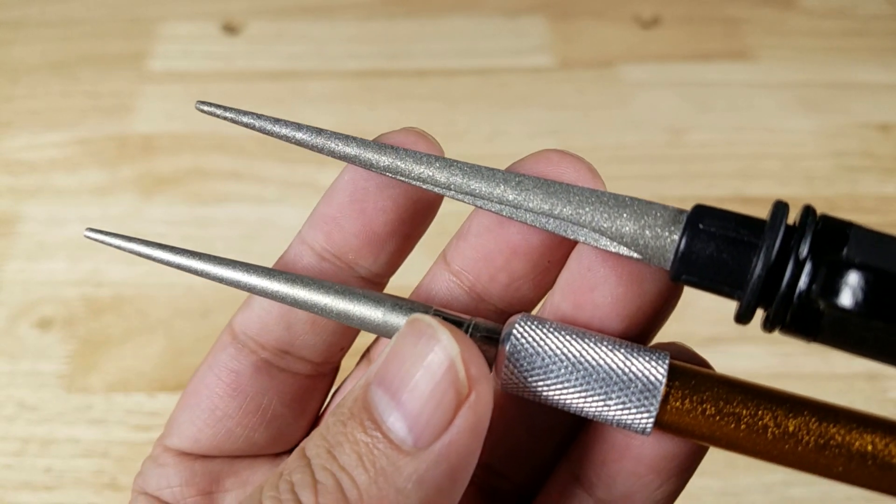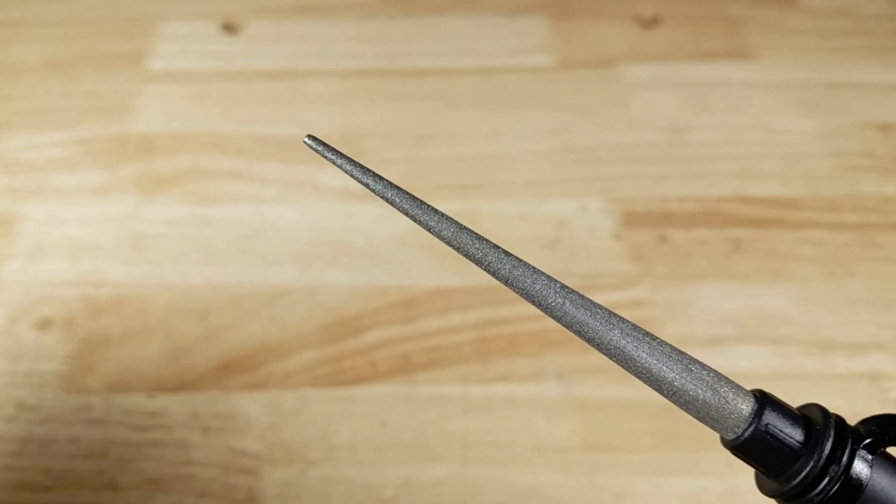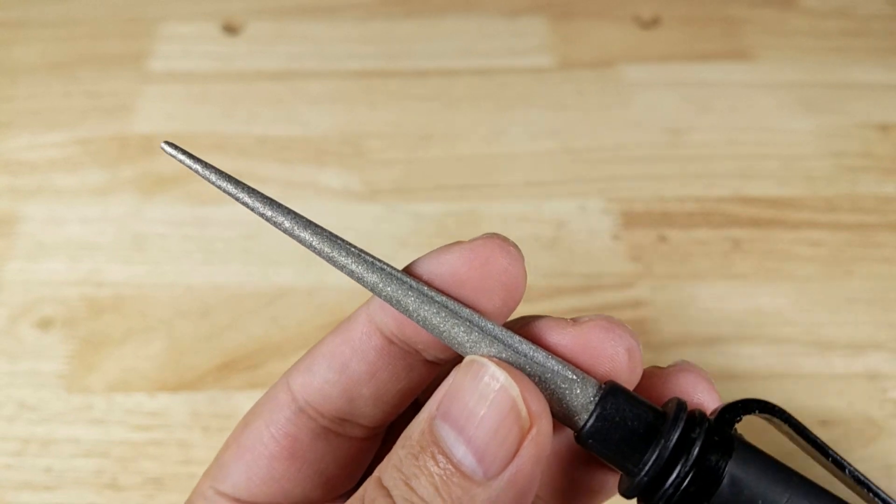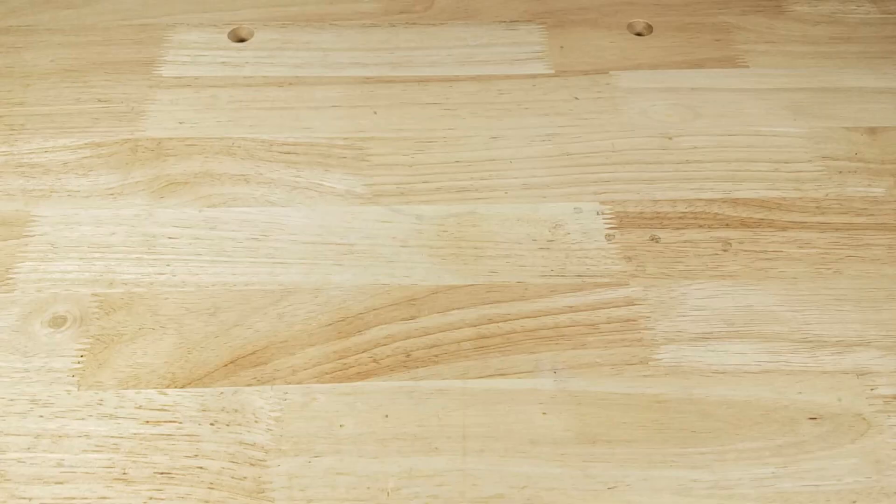So I would only use this if I had to remove a lot of steel, because maybe there's a chip in the blade, or maybe I have an outdoor blade that I know I'm just going to keep sharpening that doesn't really need a fine polish, because this is pretty coarse.